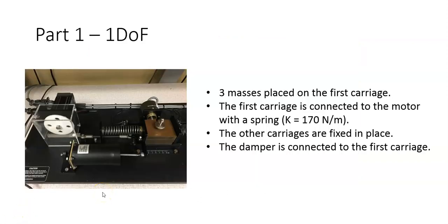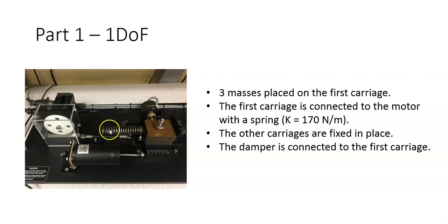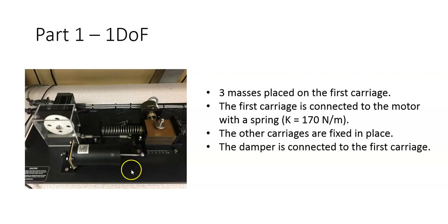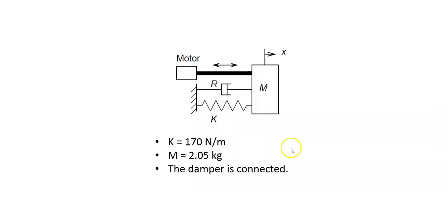Here is the setup for the first part of the experiment. Three masses are placed on the first carriage; the other two carriages are fixed in place, so we only consider the first carriage. The spring constant is 170 Newton per meter and the damper is connected. The objective of this first part is to find the damping coefficient, damping constant, and spring constant, and compare them to the data provided in the manual. It is called one degree of freedom because only one carriage is allowed to move.